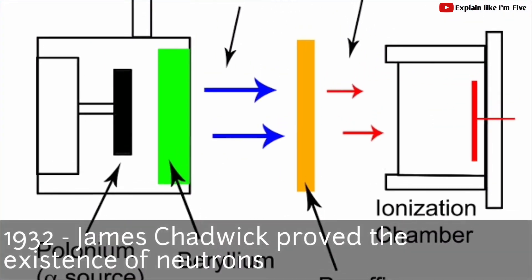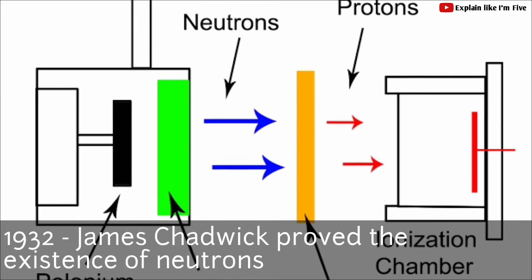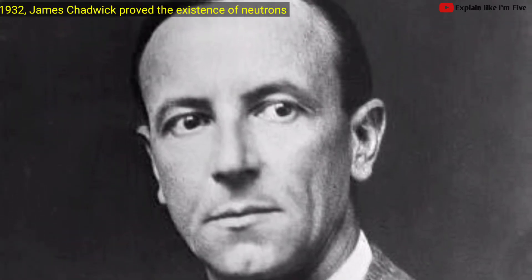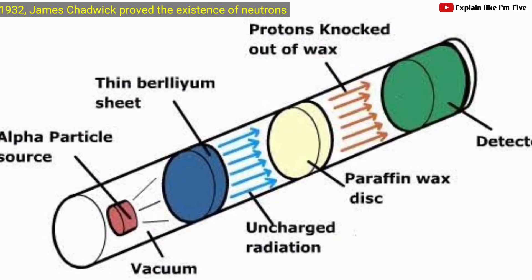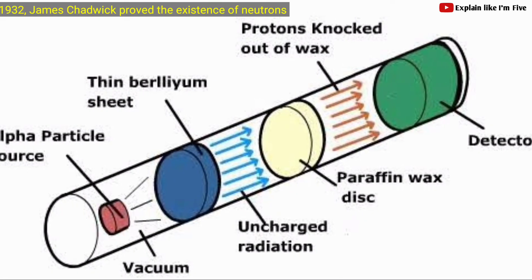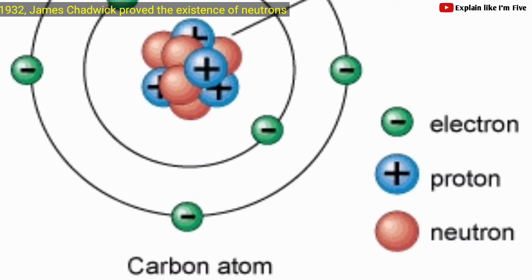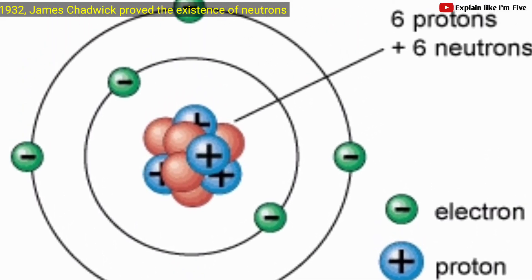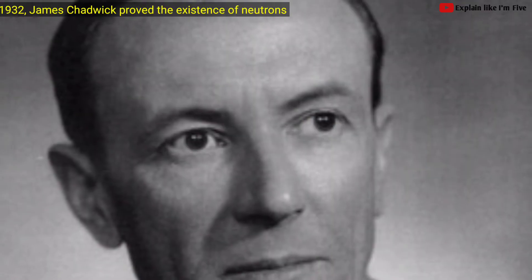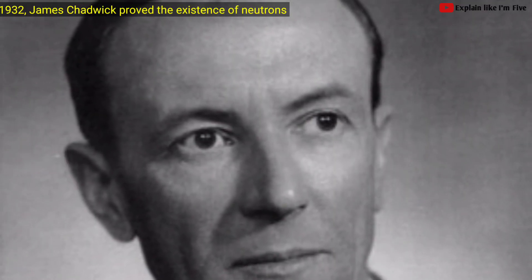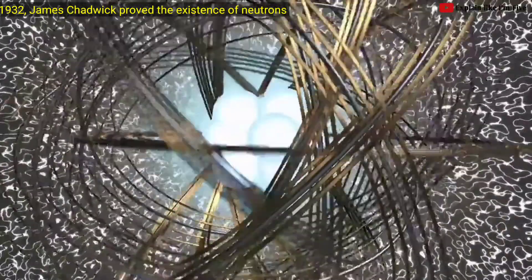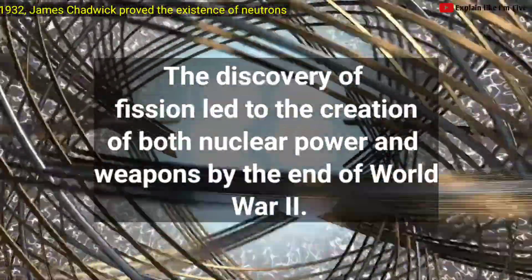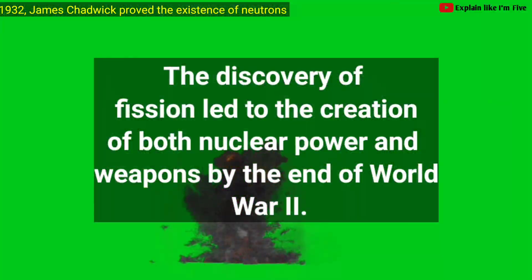In 1932, James Chadwick proved the existence of neutrons. He had heard of a new method of detecting particles emitted by radioactive elements, developed by Irene Joliot-Curie. The essential nature of the atomic nucleus was established with his discovery of the neutron as a new elementary particle distinct from the proton. The discovery of fission later led to the creation of both nuclear power and weapons by the end of World War II.